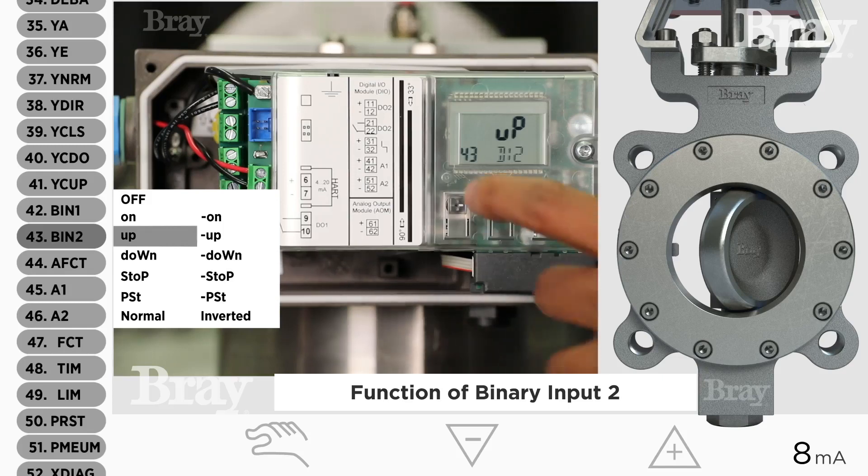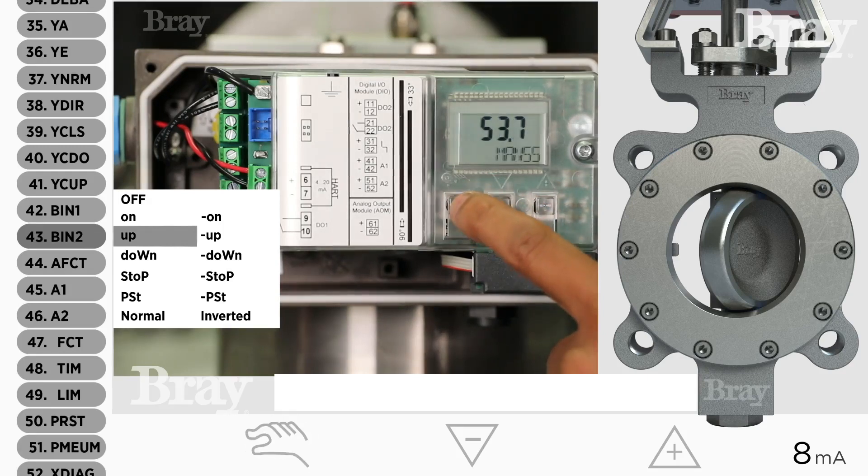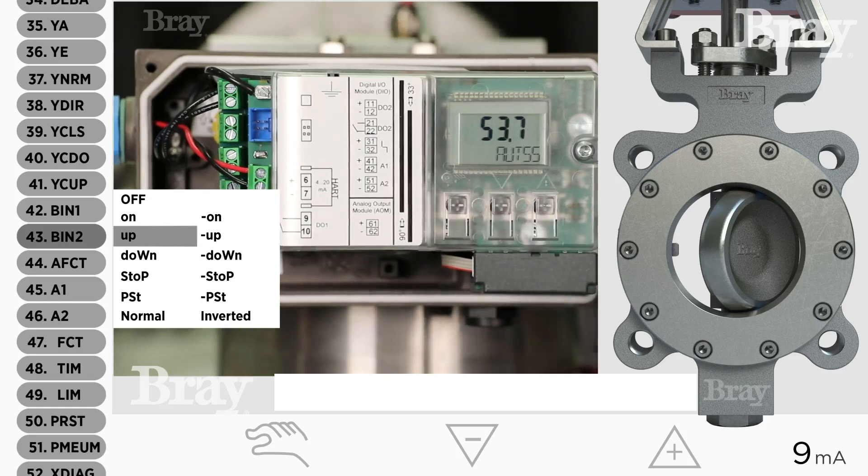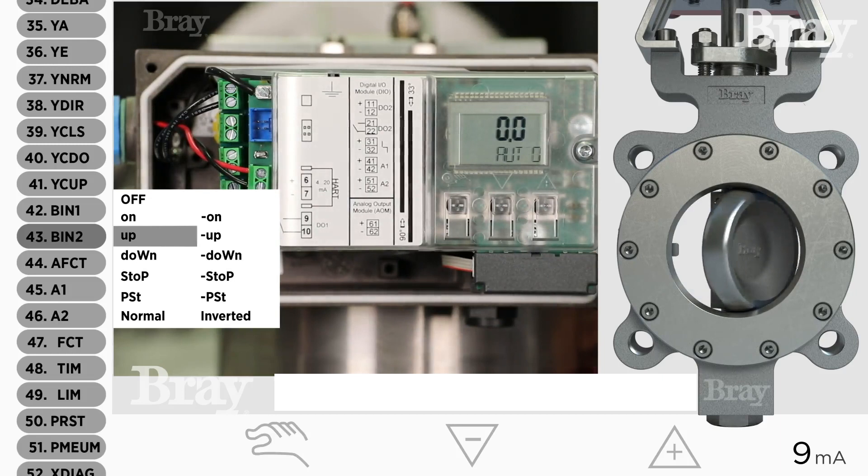We're going to lock it in by holding the hand button. With loop power, everything can function normally, so it's closed for 4 milliamps with travel. Finally, it's fully open.